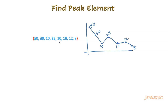They expect a solution with time complexity of O(log N). Rather than going with a linear scan over the array, what if we randomly choose an element? Let's say we have chosen 25. There could be two cases. In the first case, the random element itself is a peak element. So in such cases, we can stop searching and return its index. In our case, 25 is also a peak element — it is greater than its neighbors, so we can simply return its index.